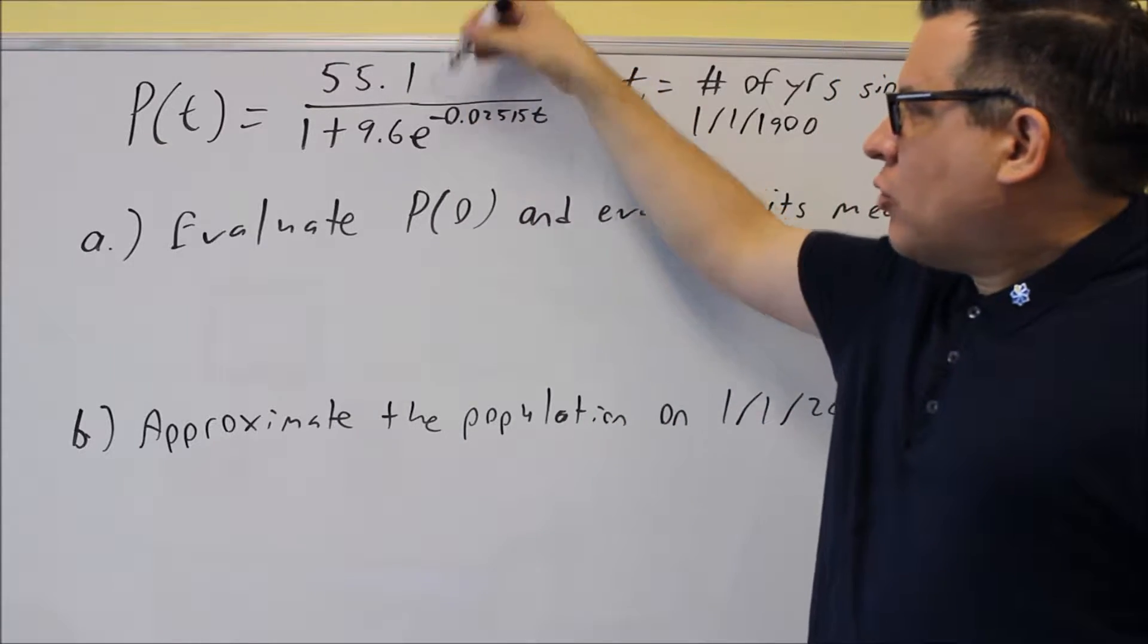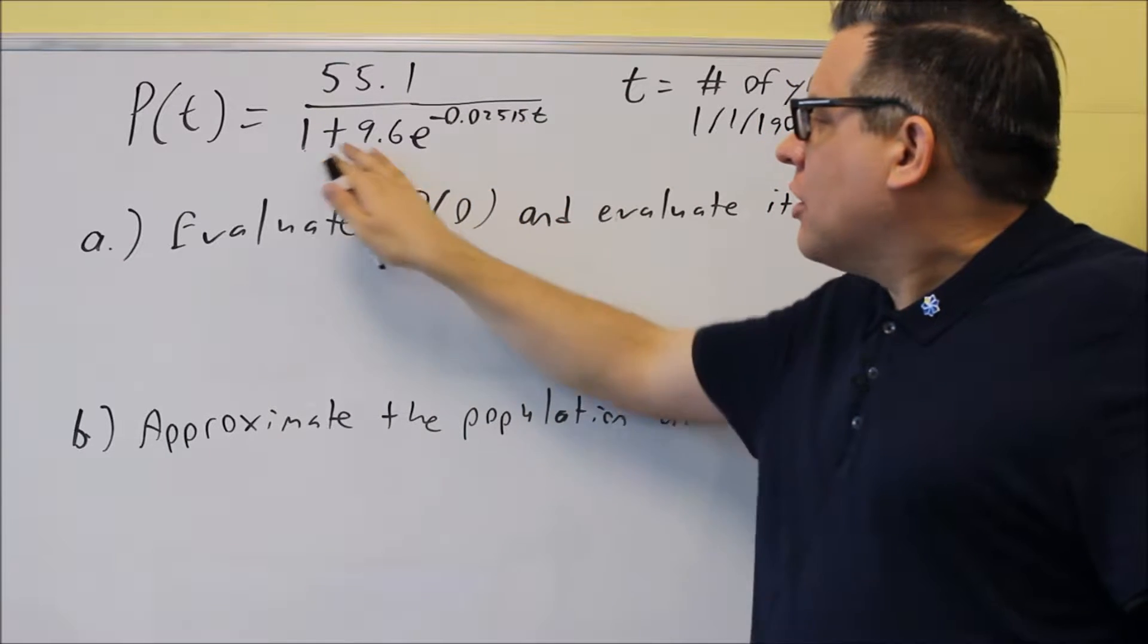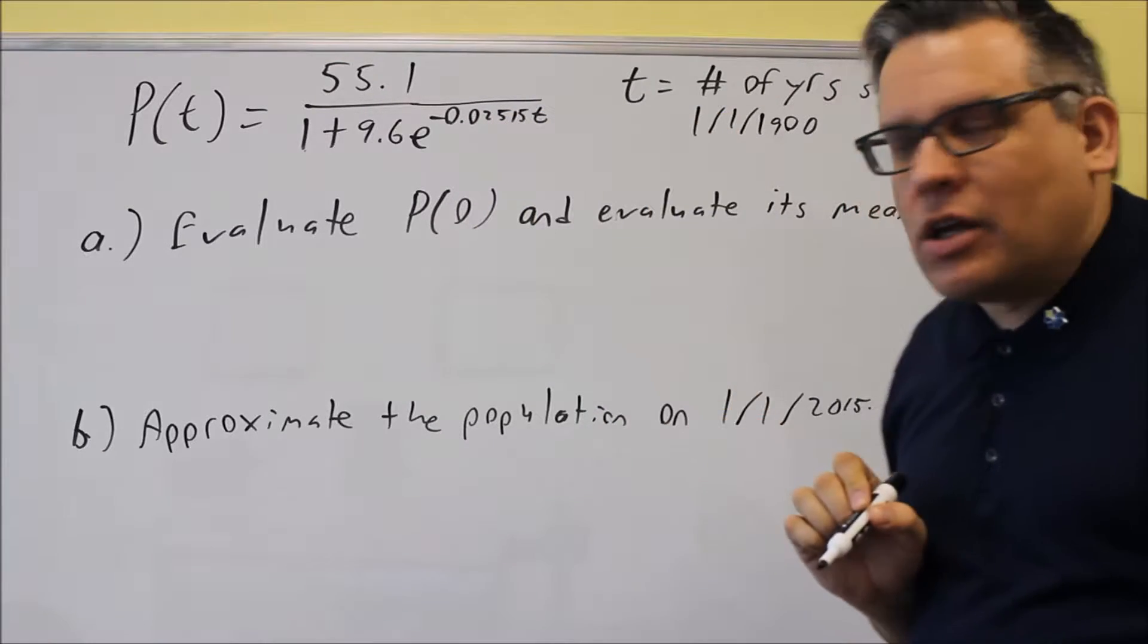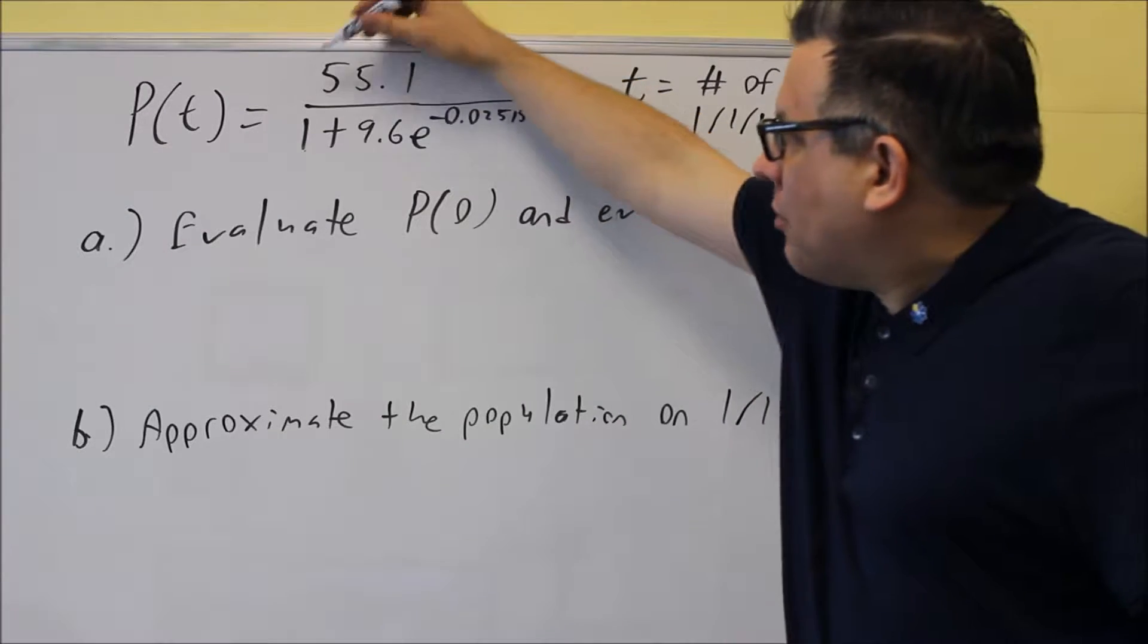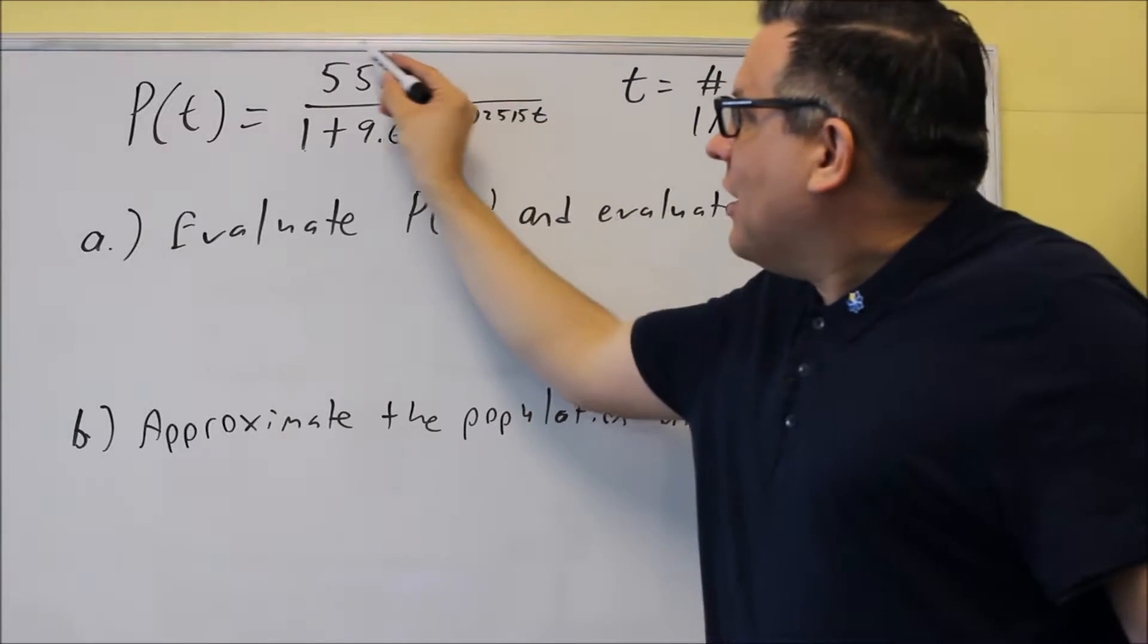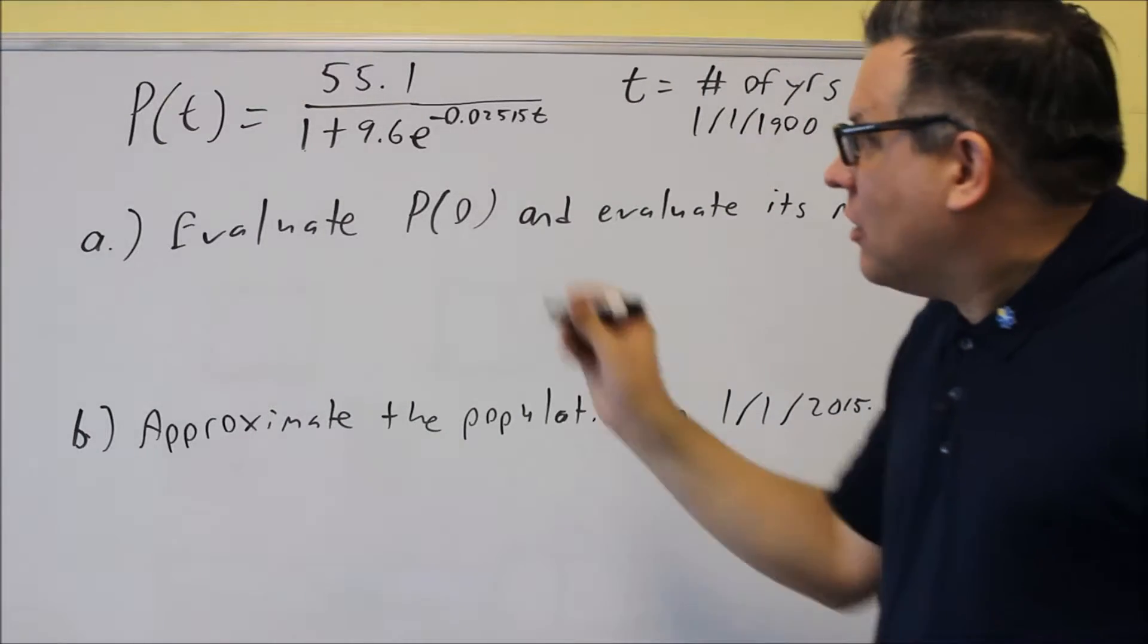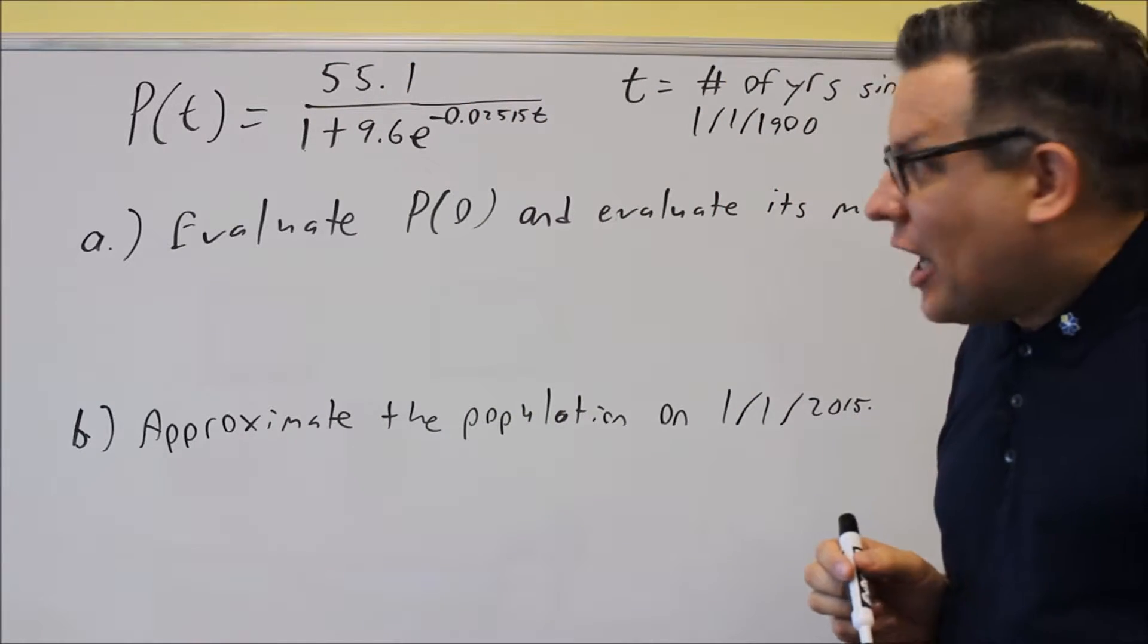So a logistic model will look something like this. You have a number on top and you have a number here, a number there. These are all going to be considered constants. This right here, this is negative 0.02515. That's considered a logistic constant. The top number is actually referred to as the limiting factor. Now what this would be is the top number tells you what the highest the graph will reach. If you take a look at the notes where I mentioned that, if it talks about limiting factor, that's the number that would be on top.